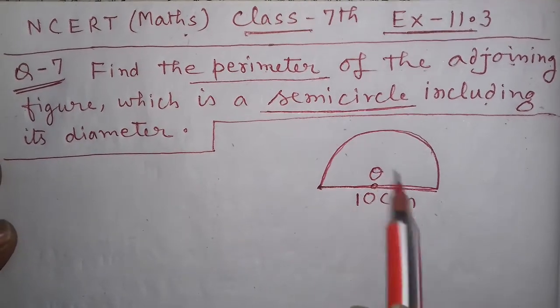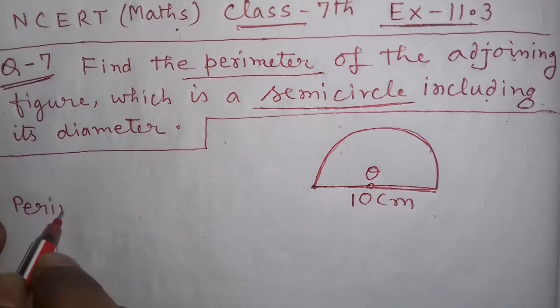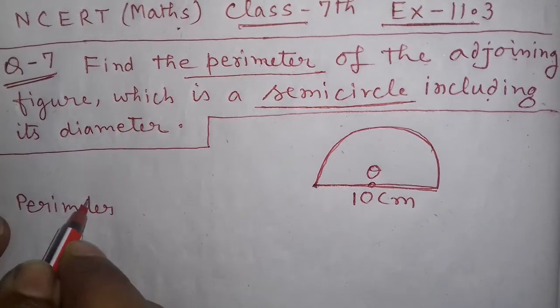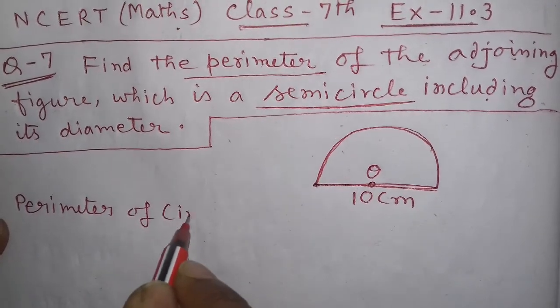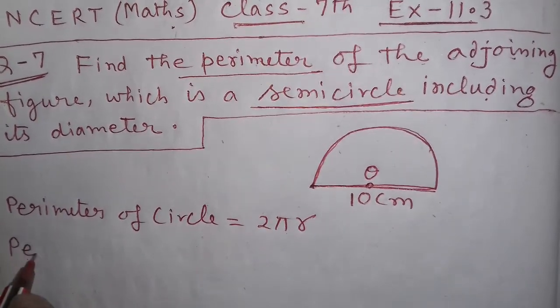Now, the perimeter of a circle equals 2πr. And the perimeter of a semicircle...